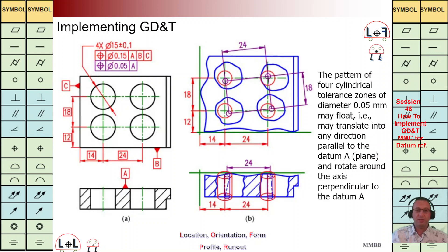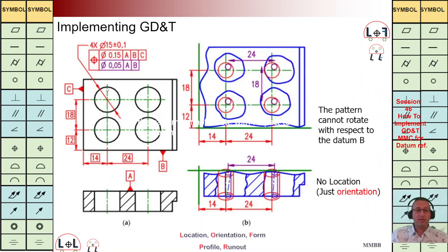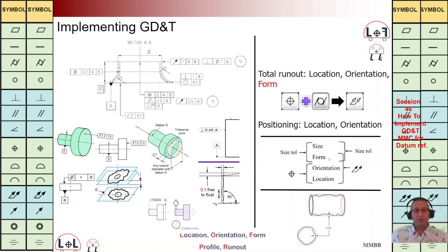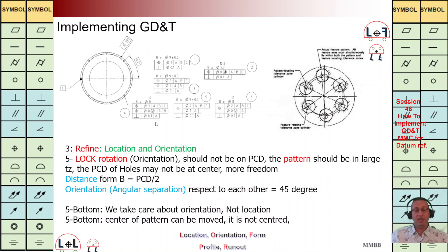Hello everybody, glad to see you today. We're going to talk about positioning control. As we can see at the top left, we are going to have two independent positioning controls, or we are going to have one composite positioning control. As discussed in a previous session, we need to have location, orientation, and form. We can have different combinations of positioning control.